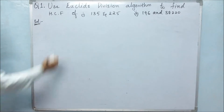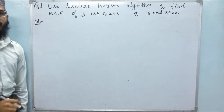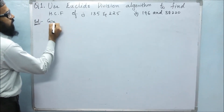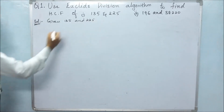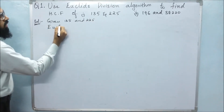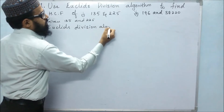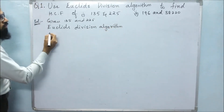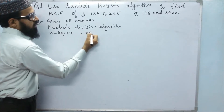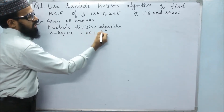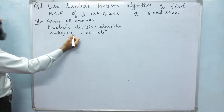In the first problem, they said to use Euclid's division algorithm to find HCF of 135 and 225. Euclid's division algorithm is A equals BQ plus R, where A is the dividend, B is the divisor, Q is the quotient, and R is the remainder.